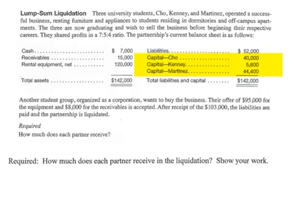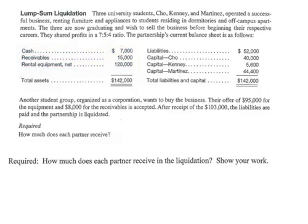The partnership is going to liquidate and your job is to say how much should each of the three partners get. A good way to start is to think of it as the opposite of the formation of a partnership. Whatever you put in becomes your capital account, so logically whatever's in your capital account should be what you can take out. Cho's got a capital balance of $40,000, so a good starting point is: shouldn't Cho get $40,000 in the liquidation? Shouldn't Kenny get $5,600? That would be true if we were sure the assets were worth what they're shown at on the balance sheet. But as accountants, we know that other than cash, that is often not the case. For example, they have $15,000 of receivables — what are the chances that all $15,000 is collectible given that their customer base is students?